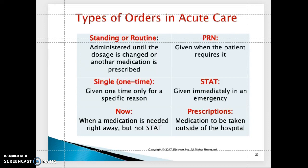Another example of a stat order: a patient might be hypokalemic and the doctor might order potassium chloride 20 milliequivalents orally stat. These are the different types of medication orders that can be given by the doctor.